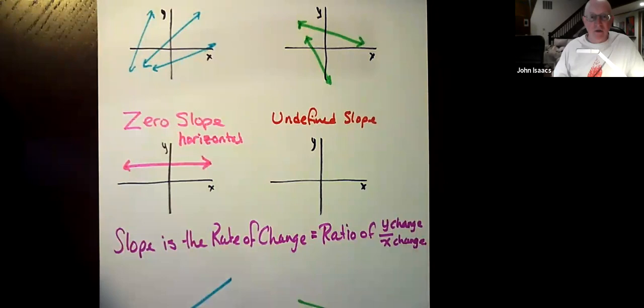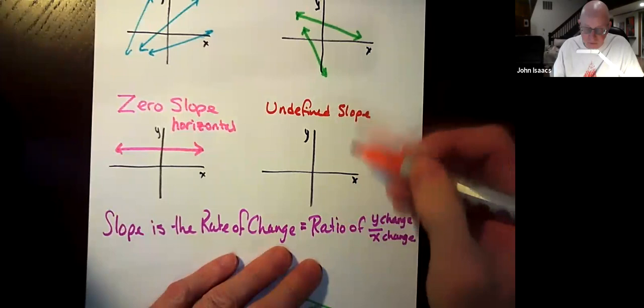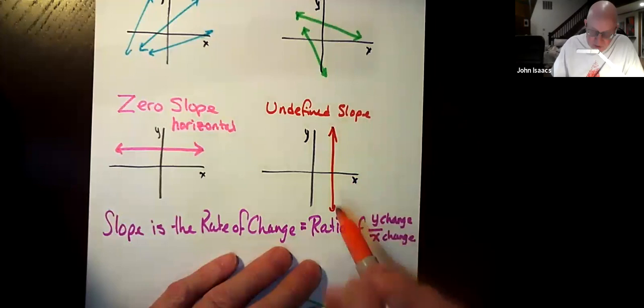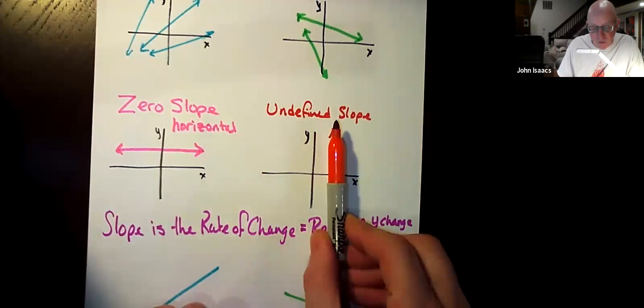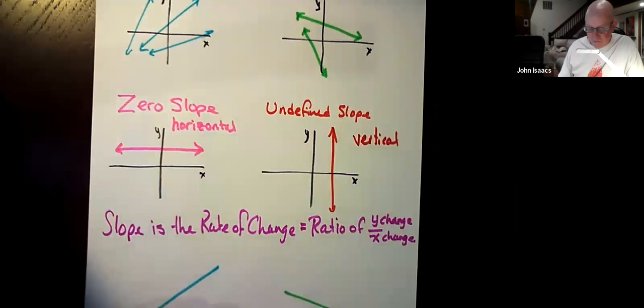An undefined slope is one that is so steep that it has no x change. So x isn't changing, y is changing infinitely. That would be a vertical line. That line could be anywhere. Just like the horizontal line over here could be anywhere. A vertical line has an undefined slope.